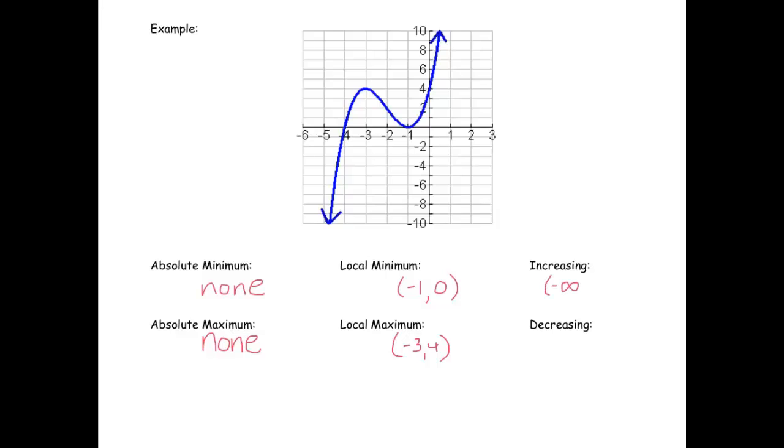So we have negative infinity to negative 3, stopped at that point, and there's our symbol for and for two intervals. It started increasing at negative 1 and went on forever towards x values of positive infinity. So it started at negative 1 and went towards infinity.